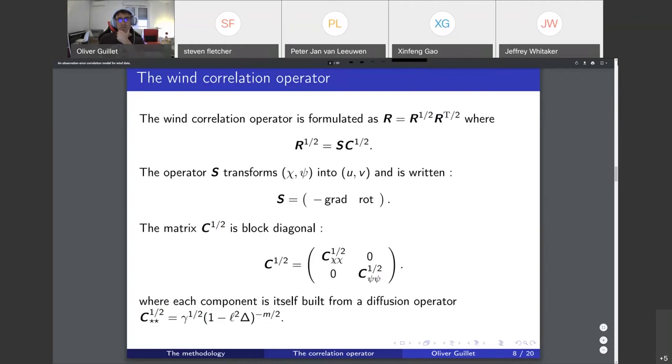What you can do is model each of these two components assuming both of these variables are uncorrelated. You can model each component with a standard diffusion operator, or it could be anything else, but this is easier when you have unstructured meshes.